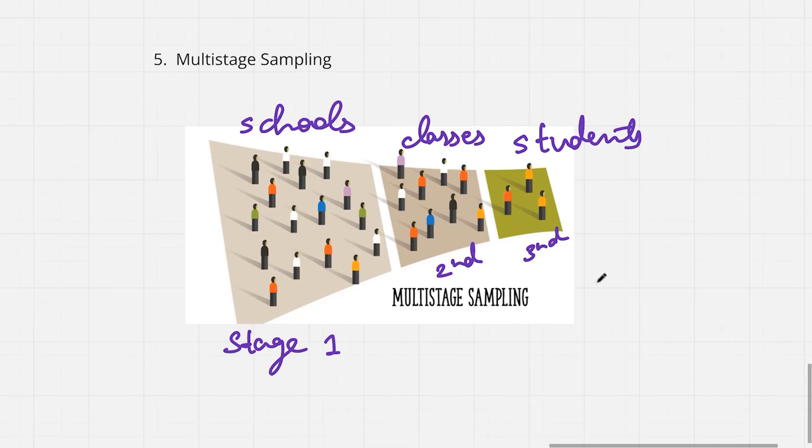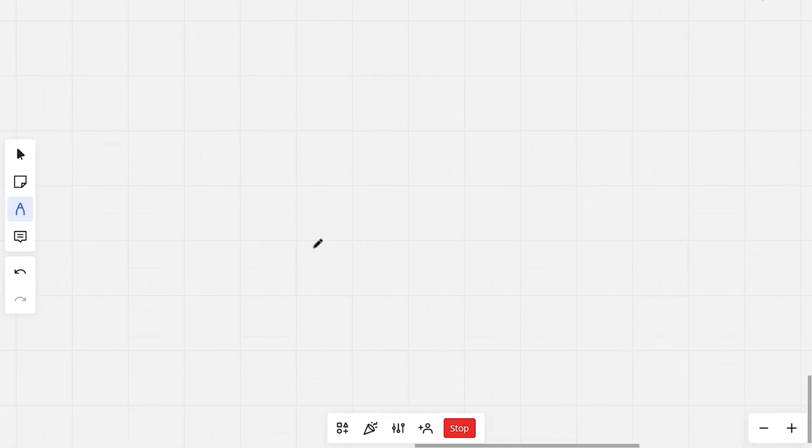By sampling in stages, we are going to save time and efforts, especially when we are dealing with large populations. It's like zooming in step by step to get the people you need. This is all for this video. I hope you guys understood the various sampling methods and were able to get some sort of insight out of it. If you guys liked it, do hit the like button and subscribe to Intellipath's YouTube channel. Thank you and see you in the next video.